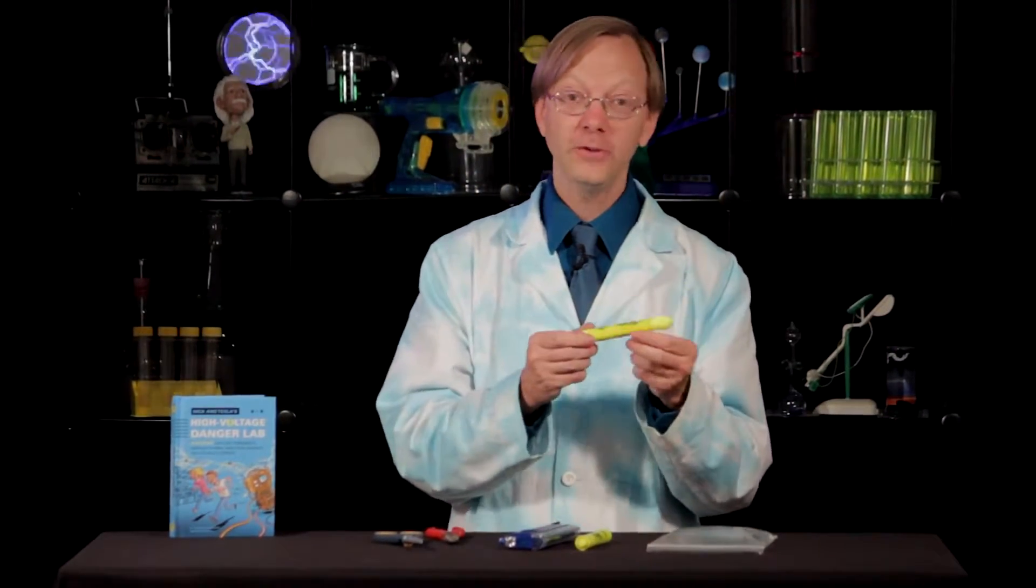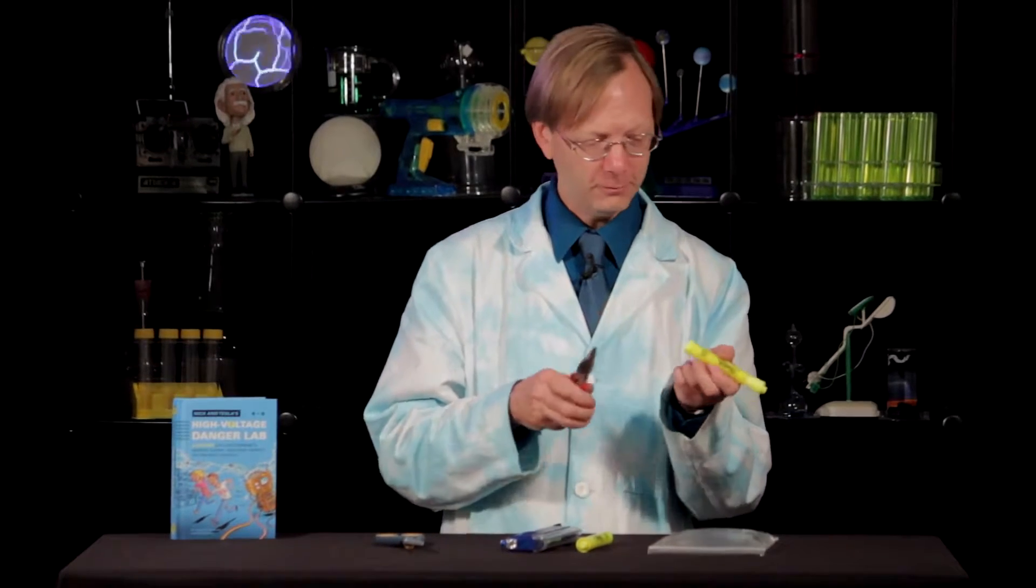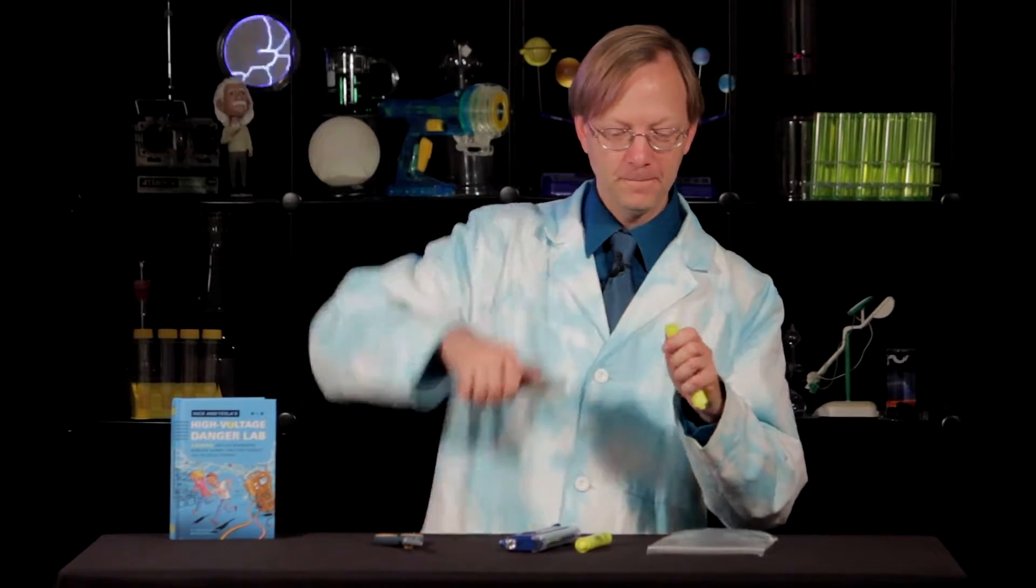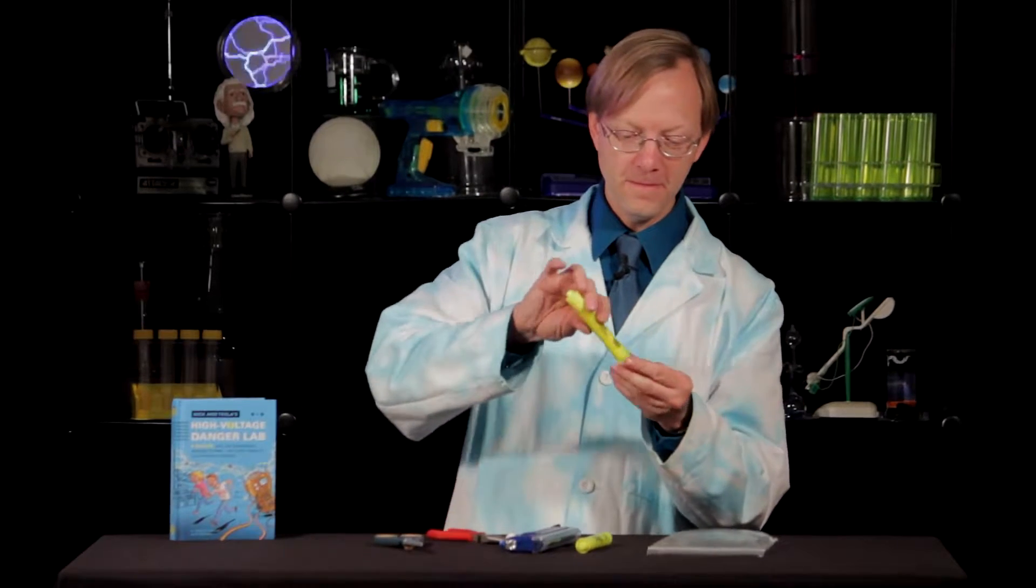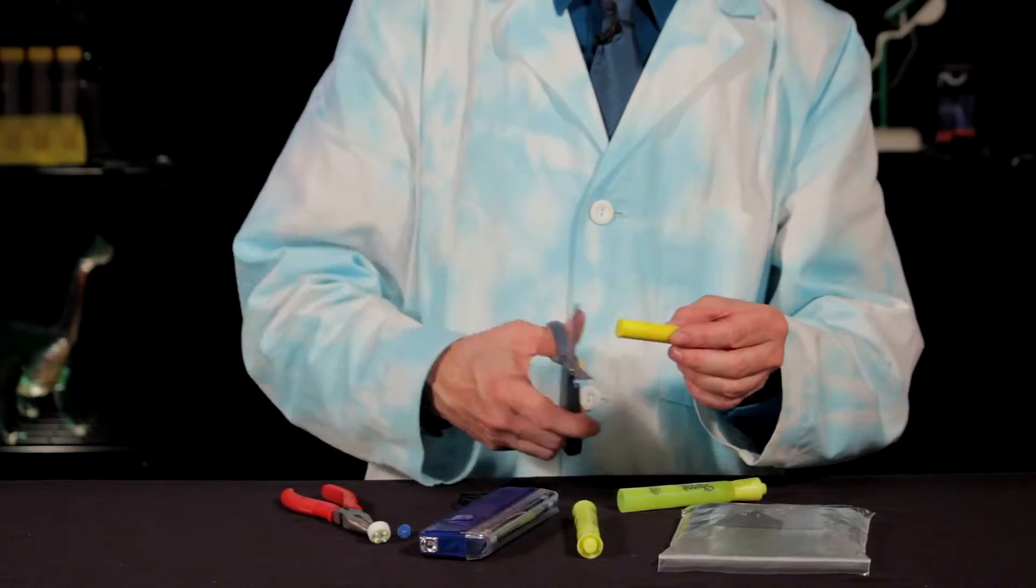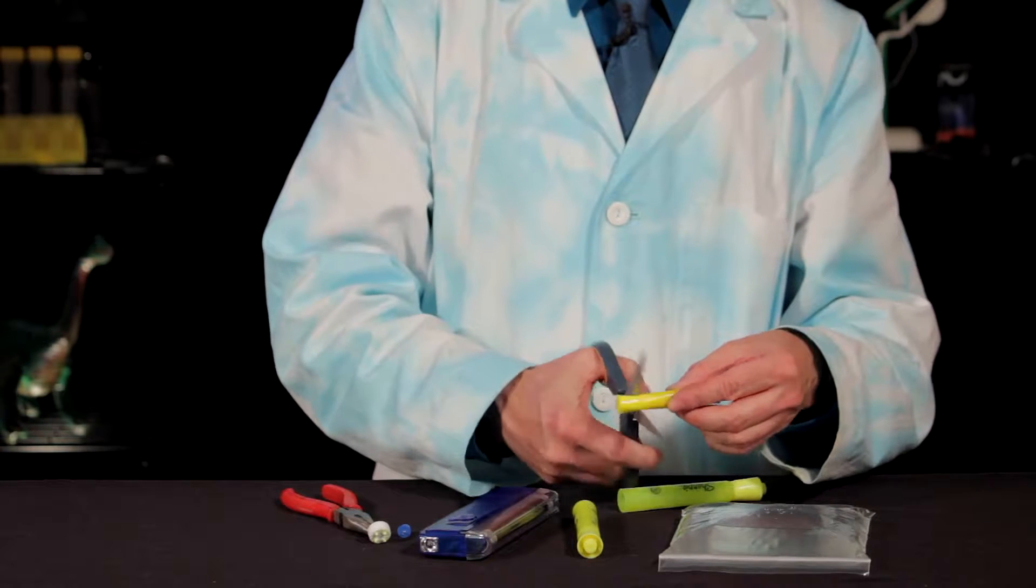To begin, you're going to need to get the ink out of these fluorescent highlighter markers. Now, I found the best way to do that is to just get yourself some needle-nose pliers and pull the back of it right out. If that goes well, the ink should come right out. Then, take your scissors and cut that ink into about four or five different pieces.